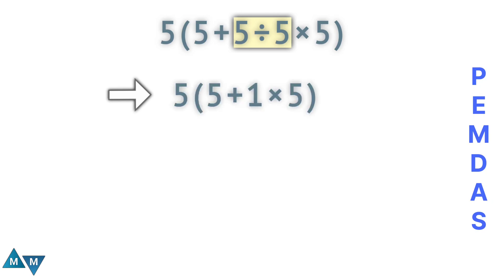So again, we are still working inside the parentheses. So now we have 5 plus 1 times 5. Since multiplication has a higher priority, 1 times 5 will be our next move, which equals 5.